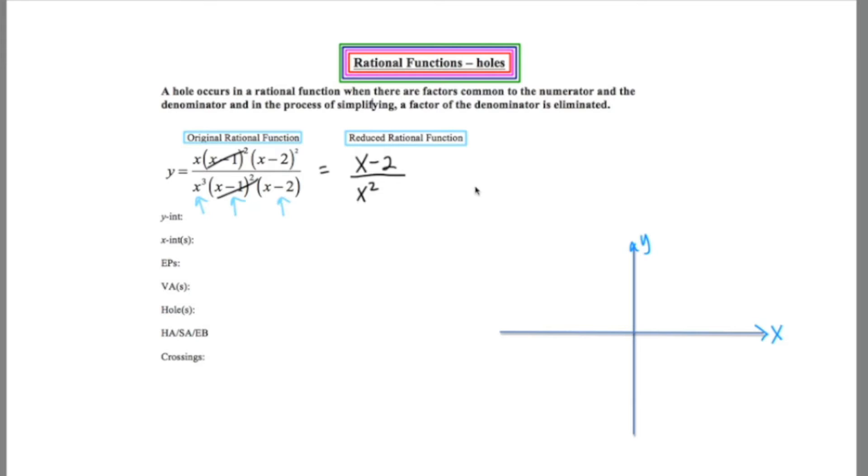Now remember from video number one that all of our cues are going to be taken from the reduced with one exception. And that exception are the excluded points. So I'm going to go ahead and put a box around that. It's my little reminder that I must answer that cue first. So this guy needs to be addressed first. The excluded points are the points which make the denominator zero: zero, one, two.